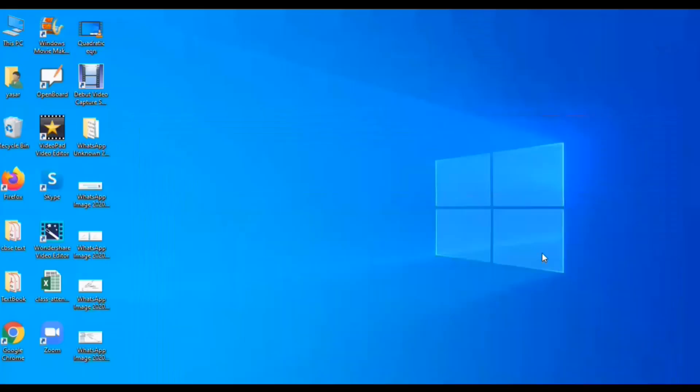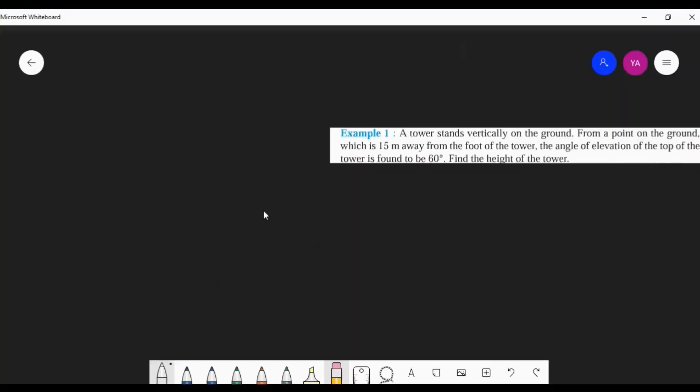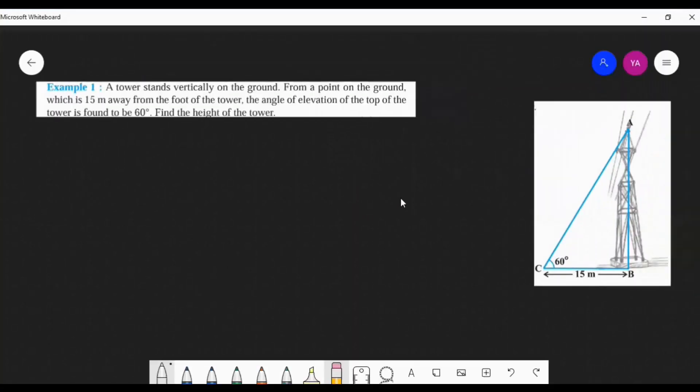Now we'll discuss some problems. Very simple problem. Example 1 is here. You read the question: A tower stands vertically on the ground. From a point on the ground which is 15 meters away from the foot of the tower, the angle of elevation of the top of the tower is found to be 60°. Find the height of the tower.